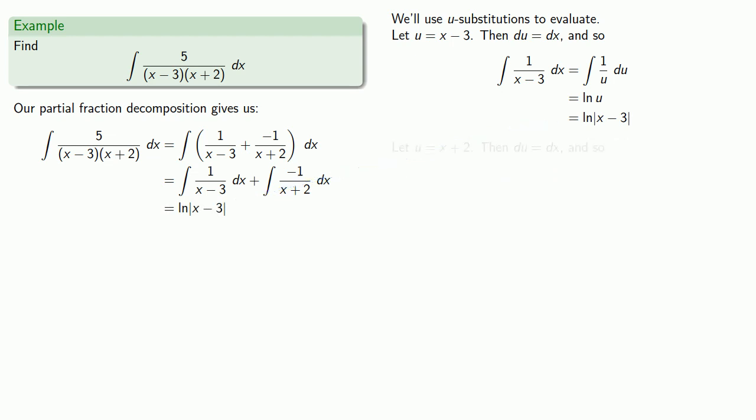Similarly, for the second integral we'll let u = x + 2 and then du will be dx. We'll make our life easier by factoring that negative one out front of the integral. We'll make our substitutions. We'll find the antiderivative. We'll put everything back where we found it. And again, because this is log, we'll want to take the log of the absolute value of x + 2.